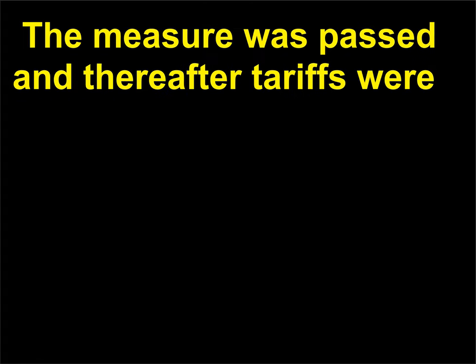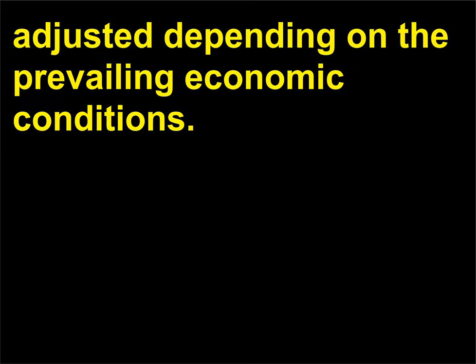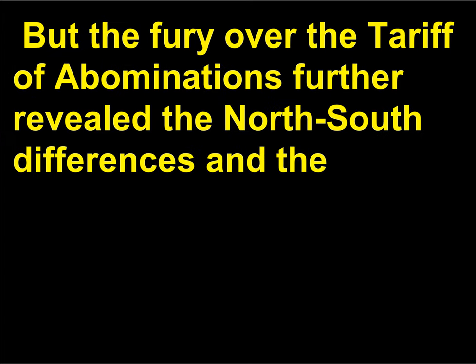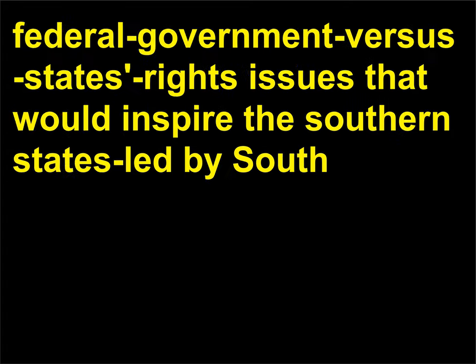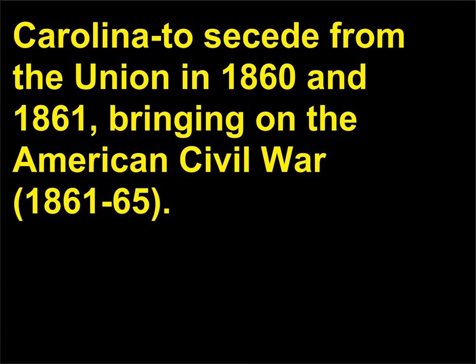The measure was passed and thereafter tariffs were adjusted depending on the prevailing economic conditions. But the fury over the Tariff of Abominations further revealed the north-south differences and the federal government versus states' rights issues that would inspire the southern states, led by South Carolina, to secede from the Union in 1860 and 1861, bringing on the American Civil War, 1861–65.